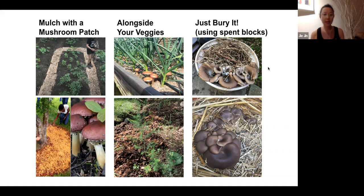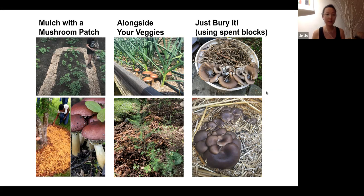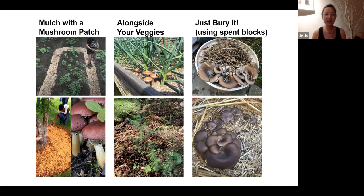Another way is to think about using the material you use for mulching as something that can also be used for growing mushrooms — combining the need to mulch with the desire to grow some mushrooms, taking advantage of multi-use space. You can also grow mushrooms alongside your vegetables. Two examples shown: wine caps grown with garlic, and wine caps grown with asparagus — both from Yolanda. This is especially beneficial for no-till growing, and particularly with perennials like asparagus because fungi don't like to be disturbed.